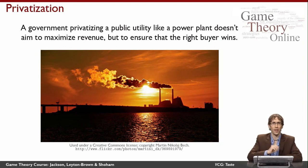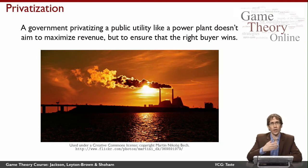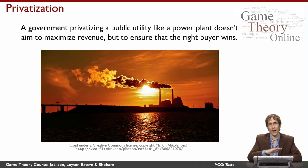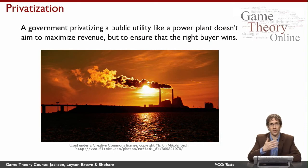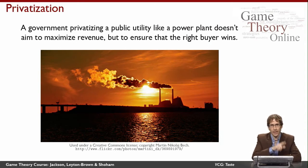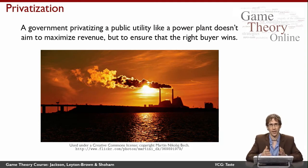So instead the government has to sell the power plant even if it doesn't care about collecting the money. The question is what rules should it use for imposing payments on the different potential buyers? If we were to use the VCG mechanism here, this would give us a way of imposing payments on the different buyers so that each of them would simply tell the government the truth about how much the power plant is worth to them. This is a simple example because the outcome space is just giving the power plant to each of the potential buyers — we're just allocating a single good.